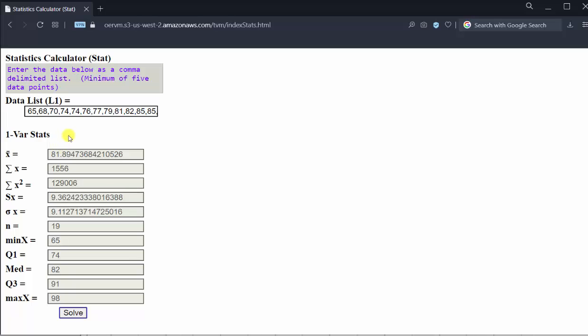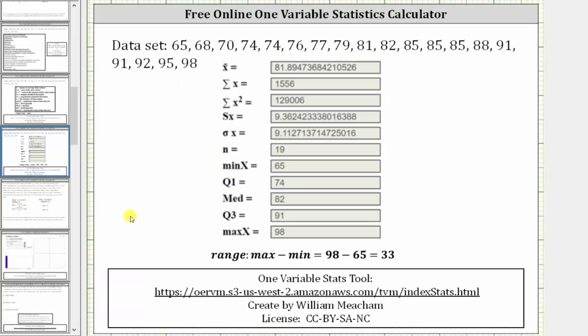Let's take this information back to our work. Let's go ahead and round the decimal values to two decimal places. And therefore, X bar or the mean is approximately 81.89. The sample standard deviation is approximately 9.36.